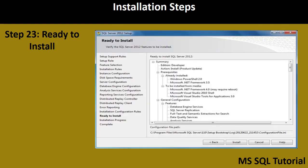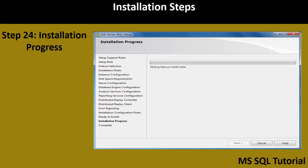Step 23 — Ready to Install — shows a brief summary of the installation: which edition you are installing, which prerequisites are already installed, what needs to be installed now, and the general configuration. Step 24 is the installation progress — you don't need to do anything here; it will automatically install all the features selected in the previous feature selection steps.